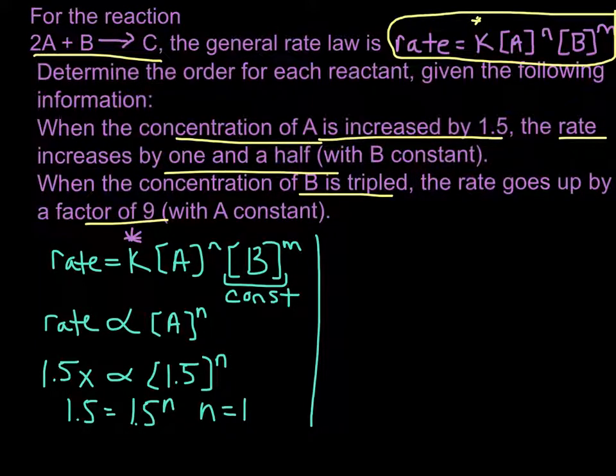Okay, so let's look at the harder one, which is B. So B is a little bit tougher. With B, we triple the concentration and the rate goes up by a factor of 9.